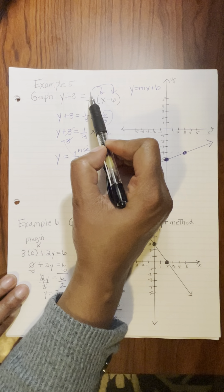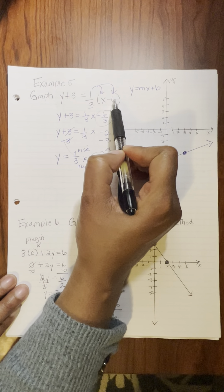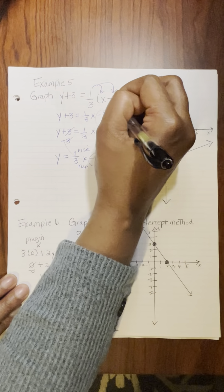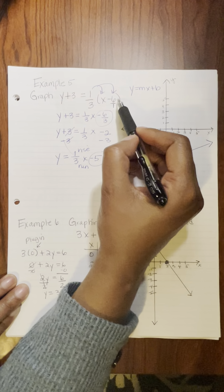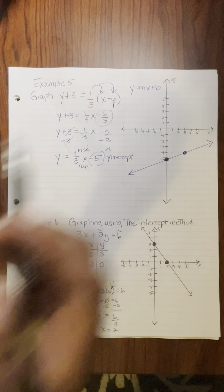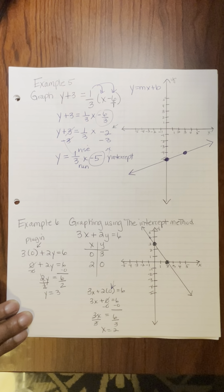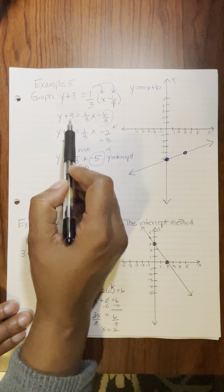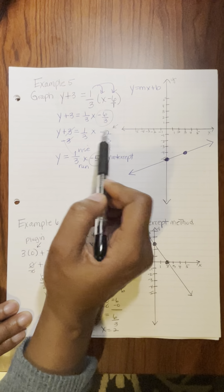You're doing your one-times tables: 1 times negative 6 is negative 6, and bring down your 3. This is equivalent to having 6 over 1 — 1 times 6 is 6, 3 times 1 is 3. Negative 6 divided by 3 gives you negative 2. So I just brought down my y plus 3 equals 1 third x minus 2 from the distributive property.